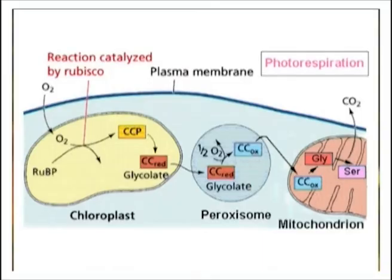In higher plants, phosphoglycolate is salvaged by a series of reactions in the peroxisome, mitochondria, and chloroplast. There are several costs associated with this metabolic pathway.